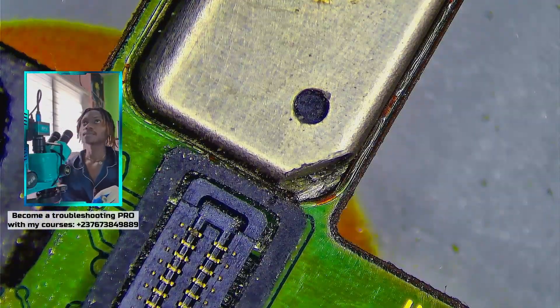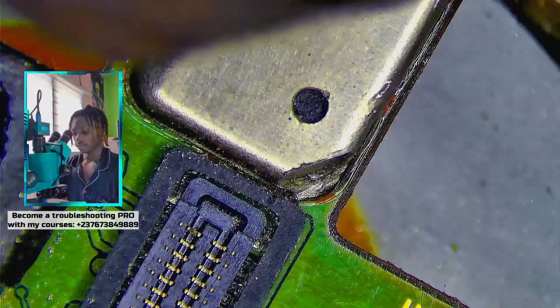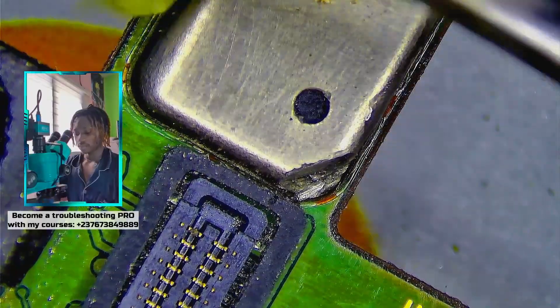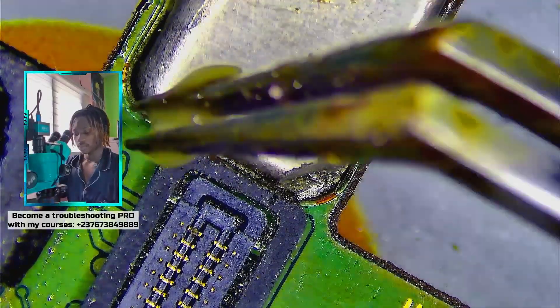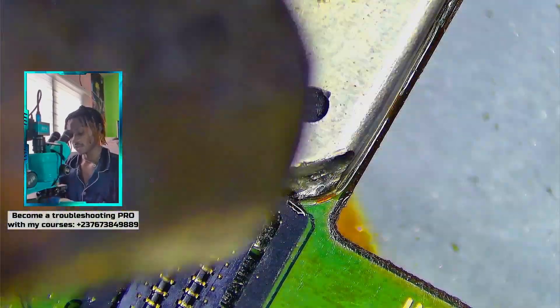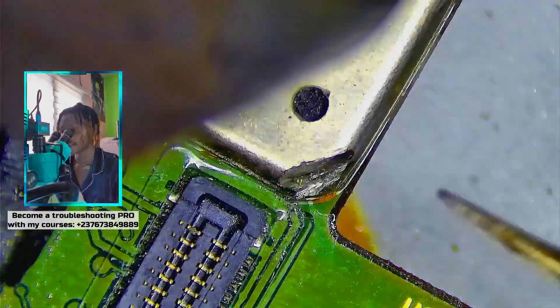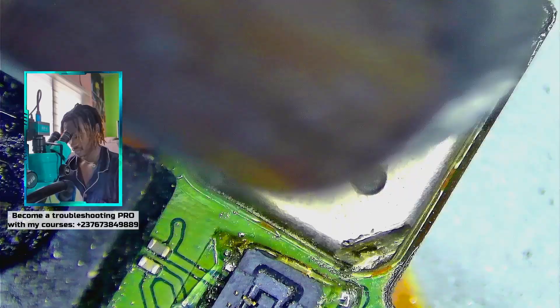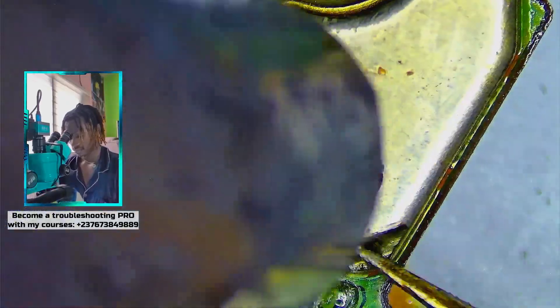The first part that I suspected was the backlight IC circuit, and that's where we're heading to right now. I use my drilling machine to create a point so I can easily pull out the shield from there. I applied my flux paste and just pull it out.